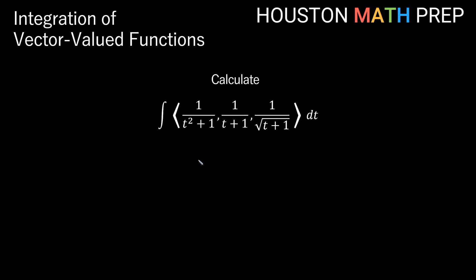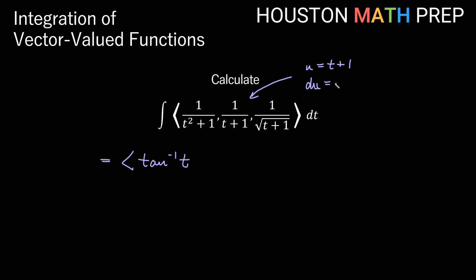When doing integrals of vector-valued functions, you'll have to remember all your integration rules. So if we're doing the antiderivative of 1 over t squared plus 1, comma 1 over t plus 1, comma 1 over square root of t plus 1 — all of these look very similar, so we want to make sure we keep our integration rules sharp. The first one is actually an inverse tangent rule, so our first component is inverse tangent of t. The second one is a log rule. If we do u equals t plus 1, du is dt, so we get a du over u situation — that gives us ln of the absolute value of t plus 1.